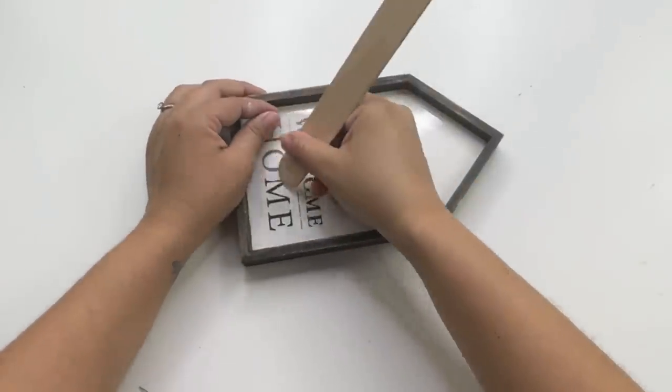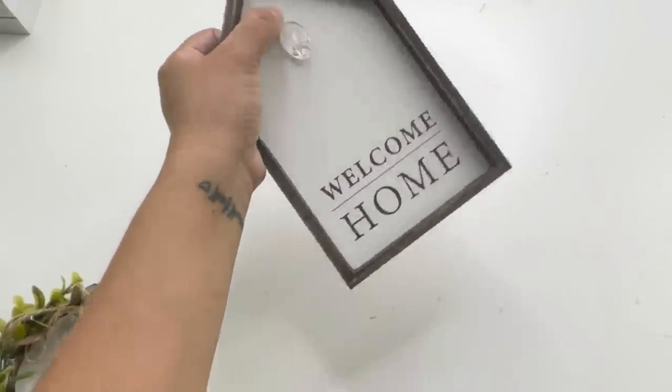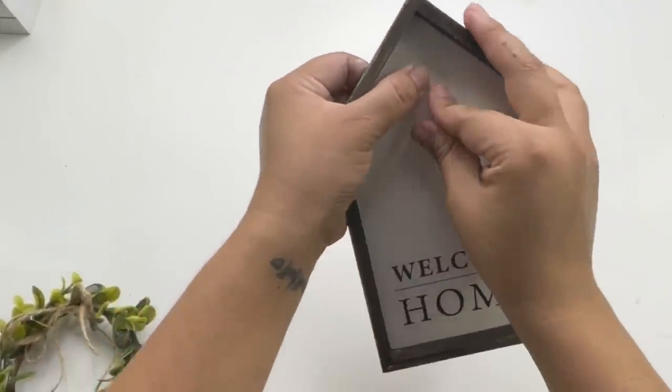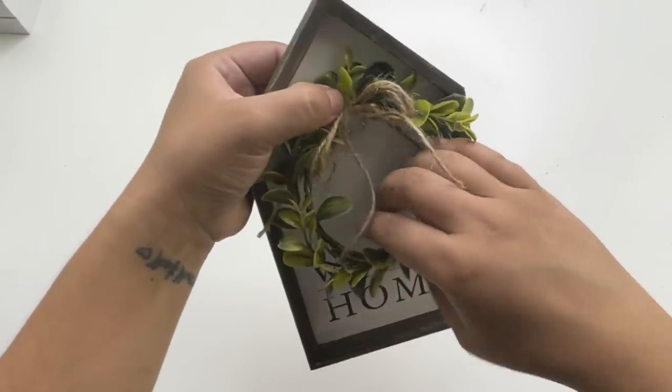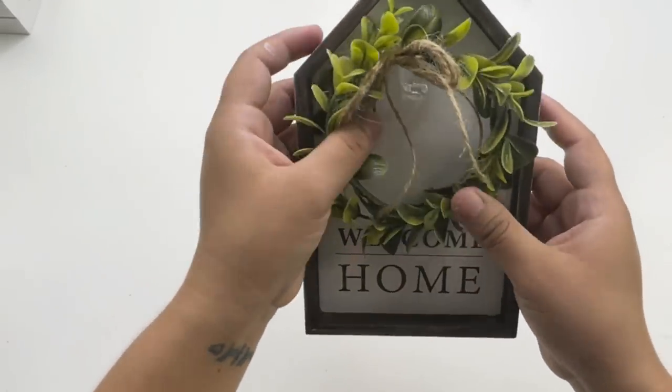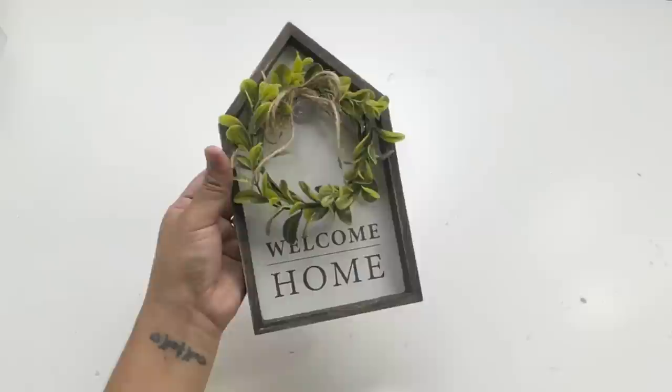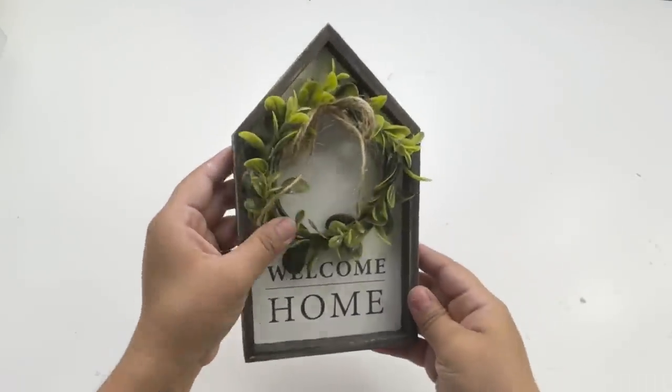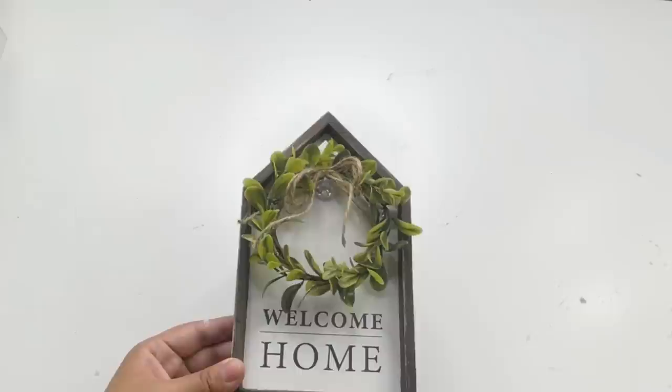The last thing I will be adding is a Dollar Tree little clear hook so I can add a wreath. The wreath I'm using is from Target from the dollar spot. I also added a little jute twine bow. And that is it for this beautiful welcome home little house.